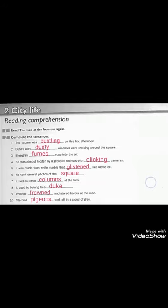Number one, the square was on this hot afternoon. The square was bustling on this hot afternoon. Number two, buses with windows were cruising around the square. Buses with dusty windows. Dusty windows here means مغبرة. Number three, blue gray fumes rose into the air. أبخرة زرقاء رمادية ارتفعت في الهواء. Number four, he was almost hidden by a group of tourists with clicking cameras. هو كان مختبئ بواسطة مجموعة من السياح الذين كانوا يلتقطوا بعض الصور بالكاميرات.